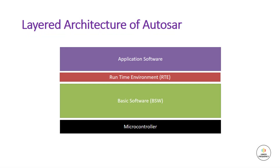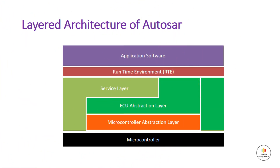Last but not the least, the bottom-most layer is the basic software layer. The final and lower-most layer of AutoSAR architecture is the basic software layer, popularly known as the BSW layer. The BSW layer provides software components that are used across different automotive systems, such as communication stack, drivers, and libraries. Let us move ahead and look into the specific BSW layer in more detail.